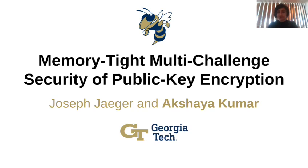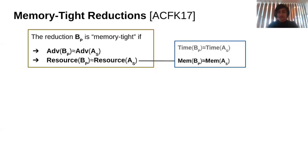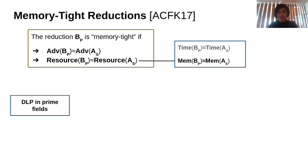We start by recalling why memory is important in the concrete security analysis of schemes. Traditionally, the most commonly considered resource in concrete security analysis is computational time. Auerbach et al. introduced the notion of memory-tight reductions in Crypto 17, where they advocated that on top of the reduction being tight in advantage and computational time, it should also be tight in memory. This is important in particular for memory-sensitive problems, that is, problems that are easier to solve with more memory. A concrete example is the discrete logarithm problem in prime fields.